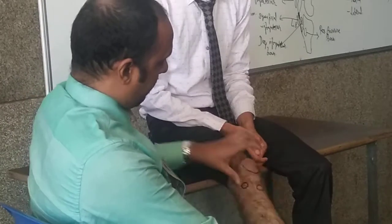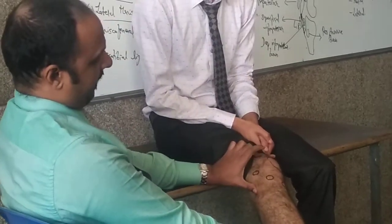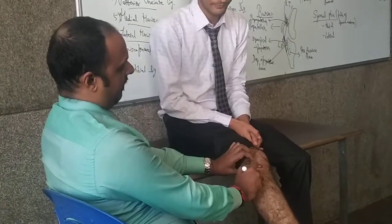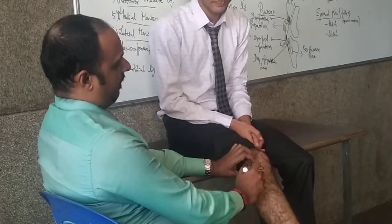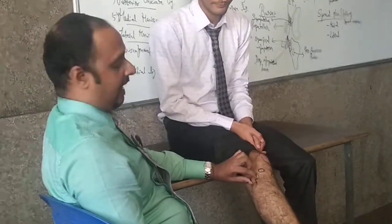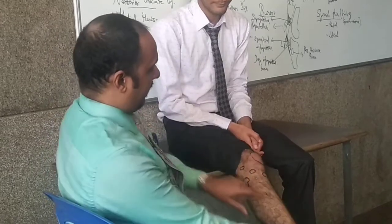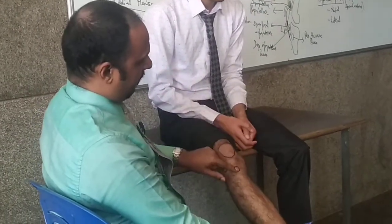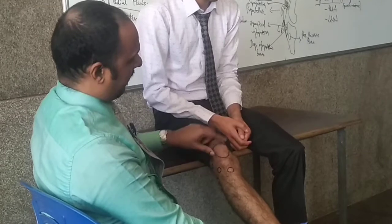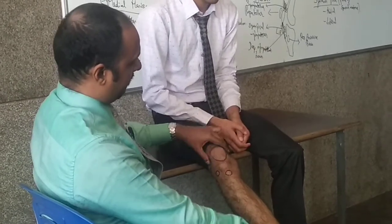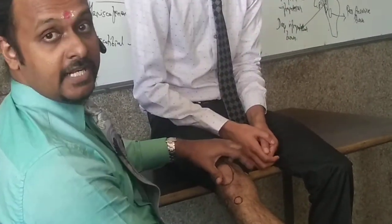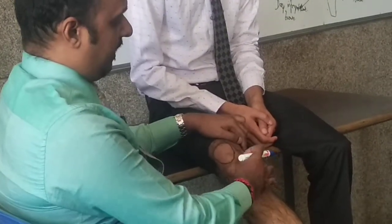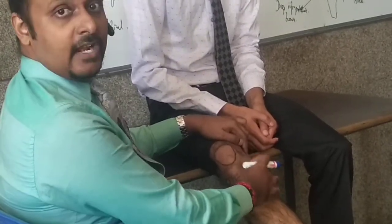From the posterior aspect, when I am touching, that is the end of the fibula — laterally. So: head of the fibula, Gerdy's tubercle, lateral epicondyle, tibial tubercle, patella — base and apex — and then the medial epicondyle. This is the medial condyle of the tibia.